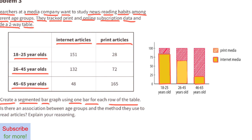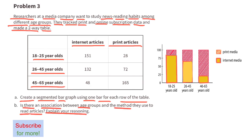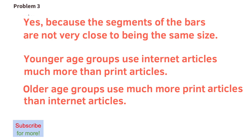The yellow section represents internet media and the red striped section represents print media. Part B: Is there an association between the age groups and the method they use to read articles? Yes, there is an association because the segments of the bars are not very close to being the same size. Younger age groups use internet articles much more than print articles, while older age groups use much more print than internet.